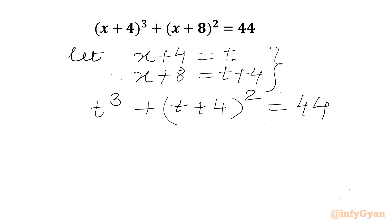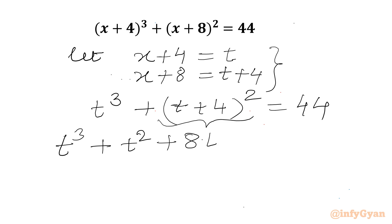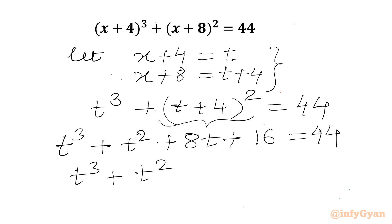Now we can use the (a + b)² formula here. So we get t³ + t² + 8t + 16 = 44, or we can write t³ + t² + 8t − 28 = 0.